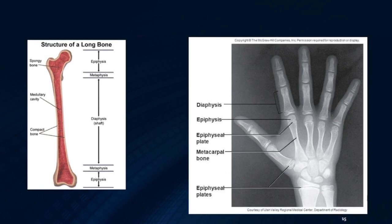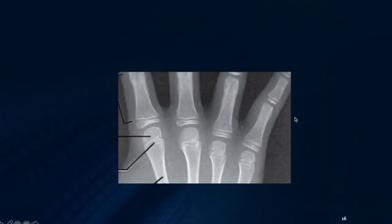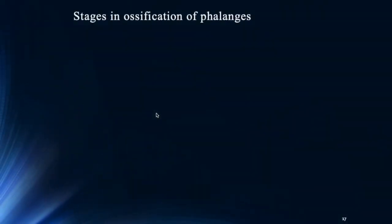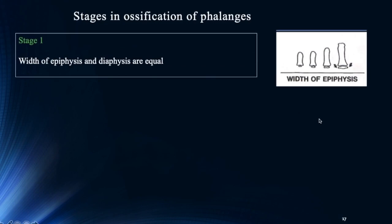We need to discuss some basic terms. One is epiphysis and one is diaphysis. Epiphysis is the rounded end of the long bone, and diaphysis is the long shaft section of the long bone. Between the epiphysis and diaphysis is the metaphysis, which is considered the growth plate. In Stage 1 of ossification of the phalanges, the width of the epiphysis and diaphysis are equal.